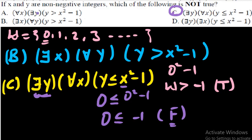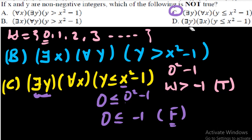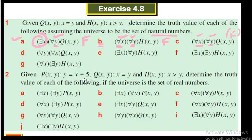Choice (d) says: there exists x, there exists y — this property works. We can find numbers x and y that satisfy the condition; for example, taking larger values of x makes it work. Since two existential quantifiers combined are mostly true, choice (d) is true. Therefore the answer is (c). Practice with the remaining exercises, and if you have any difficulty, write in the comment section. Thank you for watching — don't forget to subscribe, like, and share.